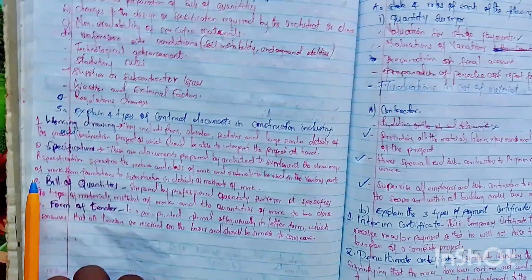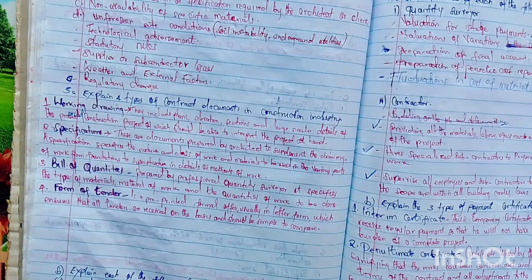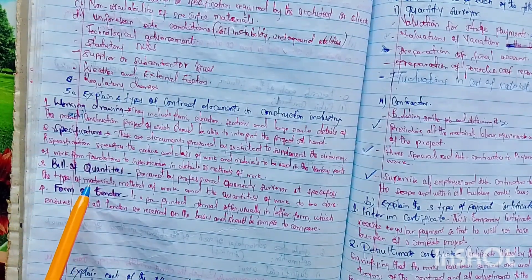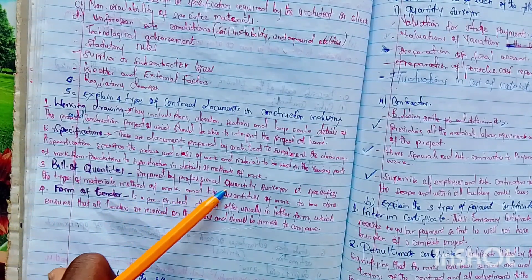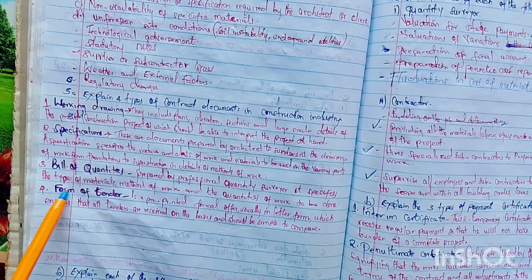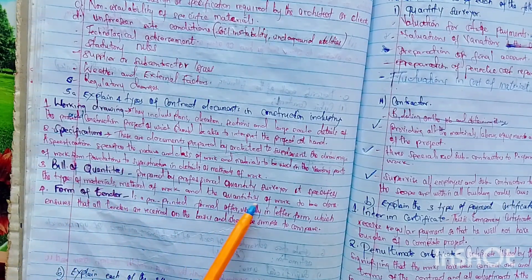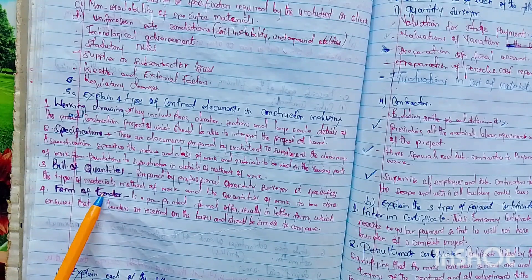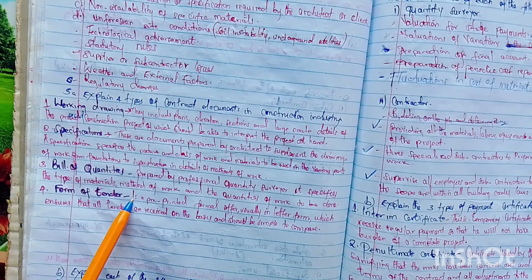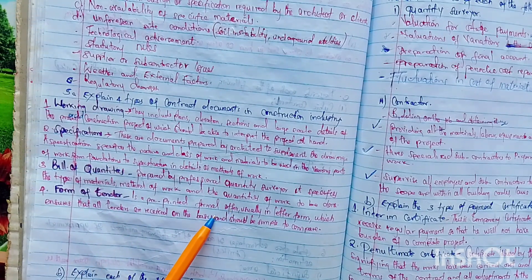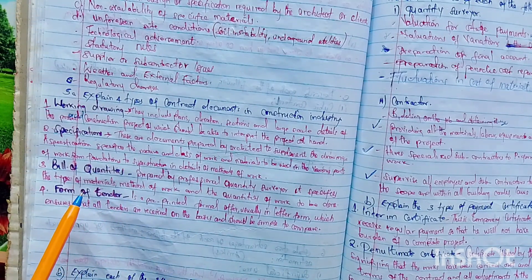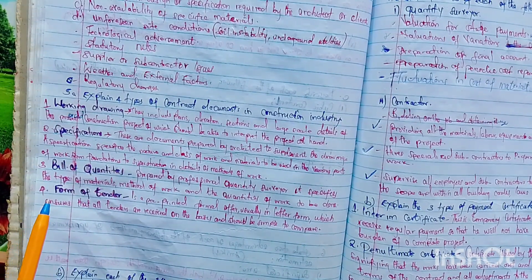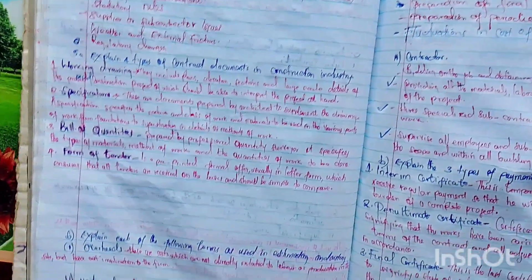Number three — bill of quantities: this is prepared by a professional quantity surveyor and specifies the type of material, method of work, and the quantity of work to be done. Number four — form of tender: this is a pre-printed form, usually in letter form, which ensures that all tenders are received on the same basis and should be simple to compare.